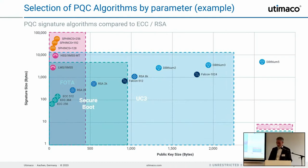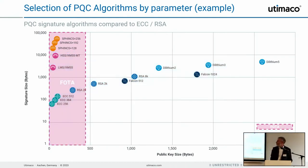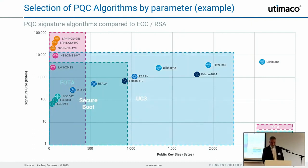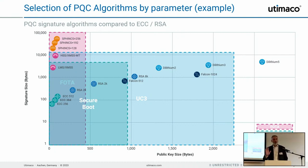For certain use cases, you can define a rectangle on the chart to see which algorithms fit your requirements. For example, for firmware updates over the air, the public key size is essential — if you limit yourself to key sizes below 500 bytes, you can see which algorithms qualify. For other use cases you may be more flexible. This is how a practitioner first approaches the topic: what is possible, what is in range, and what should I look at?